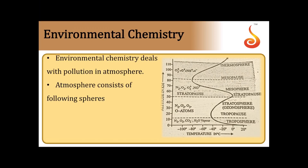Environmental chemistry deals with the pollution in atmosphere. The atmosphere consists of four spheres: troposphere, stratosphere, mesosphere, and thermosphere. Let us see the extent of these four spheres, the components present in each, as well as the variation of temperature.